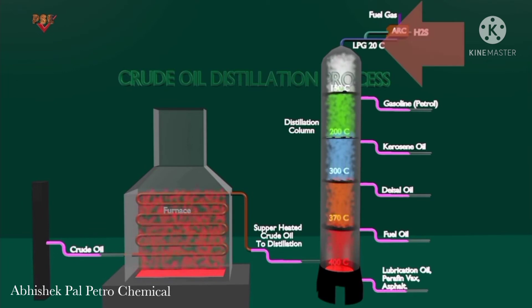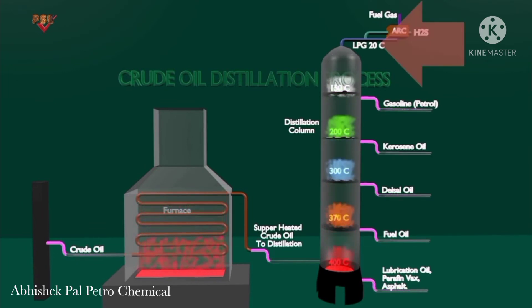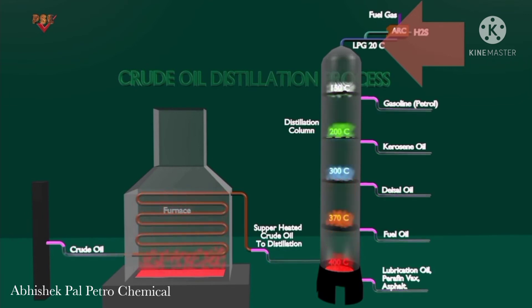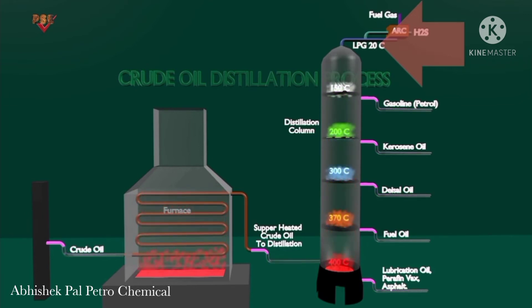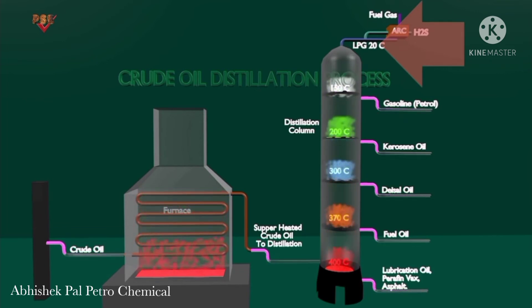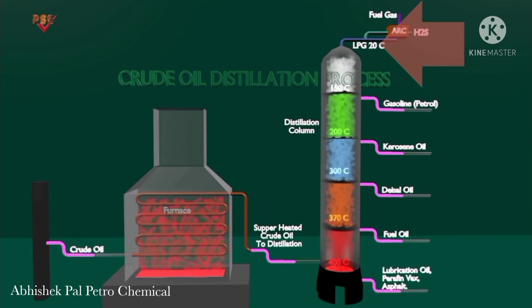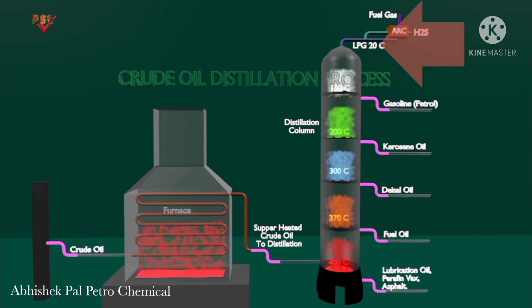Light products — light ends — are further separated into propane, normal butane, and isobutane. This stream is often referred to as liquefied petroleum gas and is sold as a cooking and heating fuel.